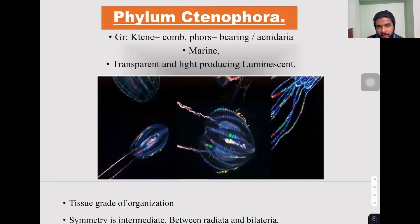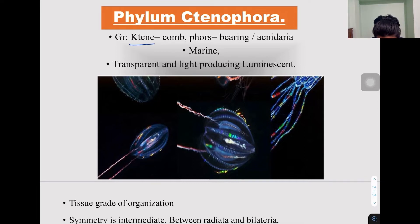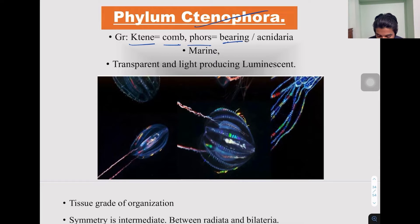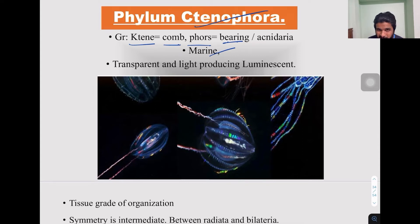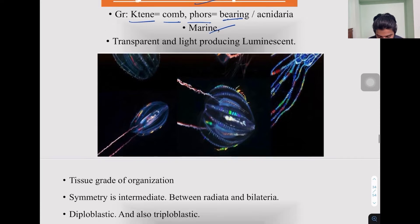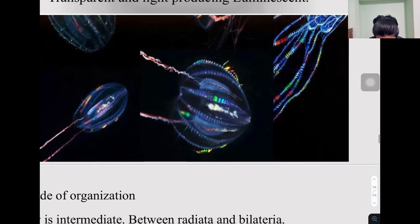In this video we will move to our next phylum, that is Phylum Ctenophora. They are called Ctenophora because 'cteno' in Greek means comb and 'phora' means bearing — they are comb-bearing organisms. They are completely aquatic and almost marine. They are transparent and light-producing; they are luminescent organisms.